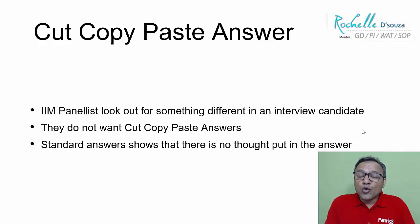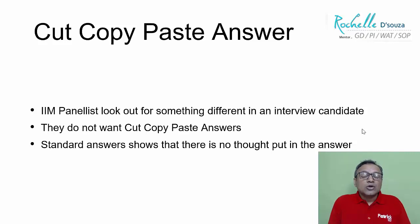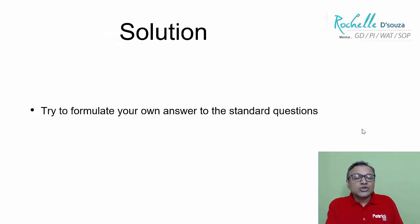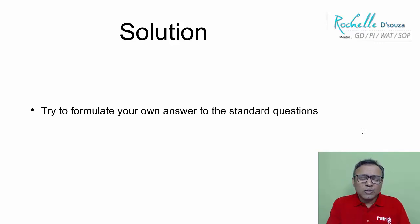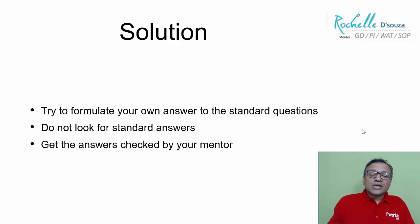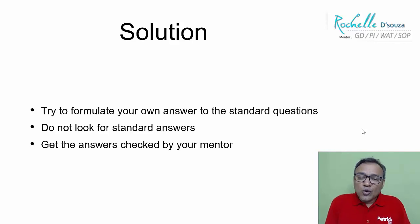Look for your own answers — don't look at standard answers that are already out there. Pick out your own answer, check whether it is really good or not, and then show it to a mentor. Say, 'This is my answer — does it look fine or should I change it?' The solution is to try to formulate your own answers for any standard question. Don't Google it, don't talk to people, don't ask friends. Start writing your own answers first from whatever you know, then get your answers checked with your mentor. Don't look for standard answers — it doesn't help at all.